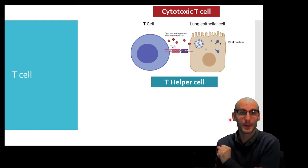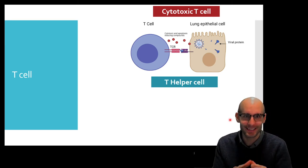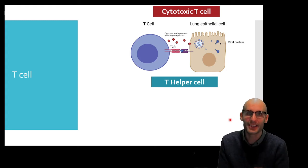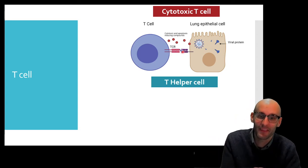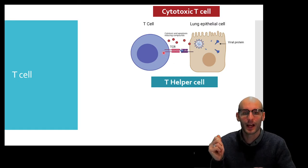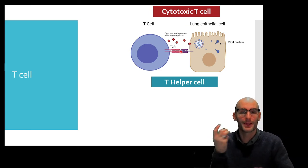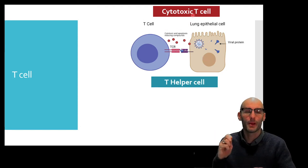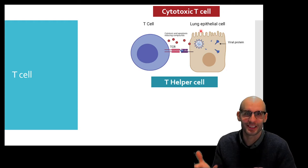Now the cytotoxic T cell, we already met this guy in a previous video. It contains a T cell receptor, and remember that receptor is unique to each T cell that you have, and it has the ability to recognize one antigen from one part of a pathogen. So for example, here we have a lung epithelial cell infected with the coronavirus. A part of the spike protein has been displayed by that lung epithelial cell, and this T cell has a unique T cell receptor that can recognize that fragment of the spike protein of the coronavirus. It is releasing cytotoxic and apoptotic-inducing compounds, and that's where the name comes from. Cytotoxic T cells go around killing cells — they are toxic to cells.